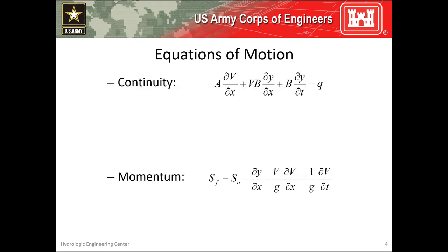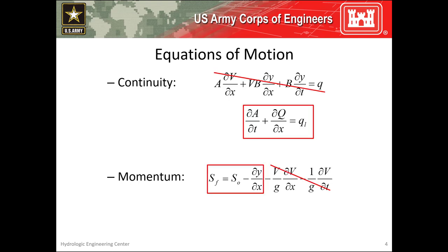Recall that all routing methods start with the equations of motion, which includes conservation of mass and momentum. The Muskingum-Kunz method simplifies the continuity equation and neglects the acceleration terms within the momentum equation. These two equations can then be combined to form what's called the convective diffusion equation. These simplifications make the method applicable to a wider range of scenarios than the Muskingum method, but it still cannot simulate backwater effects and is best applied to steep streams with slopes greater than two feet per mile and slowly rising hydrographs.